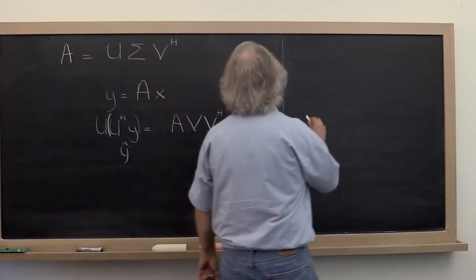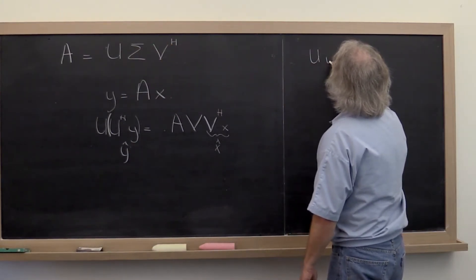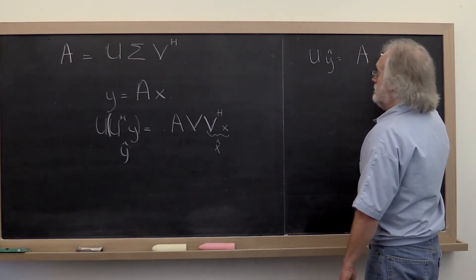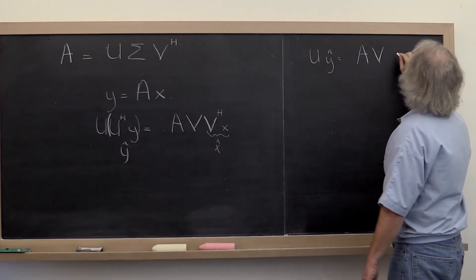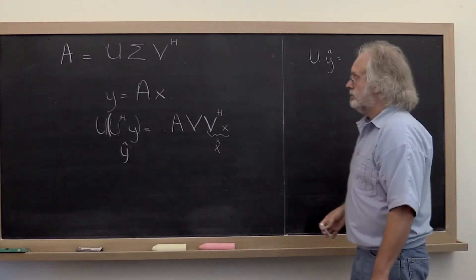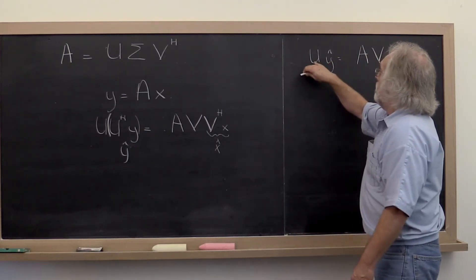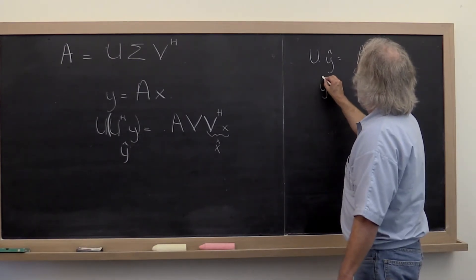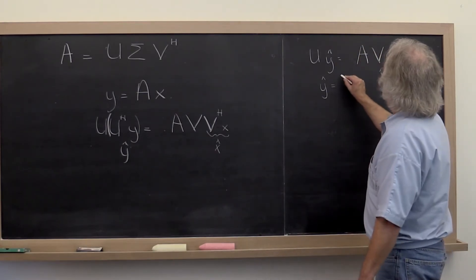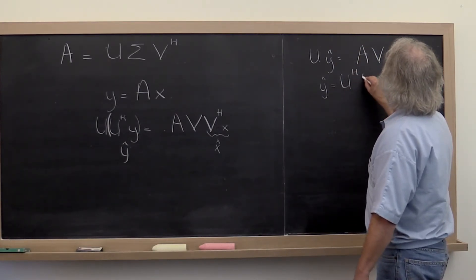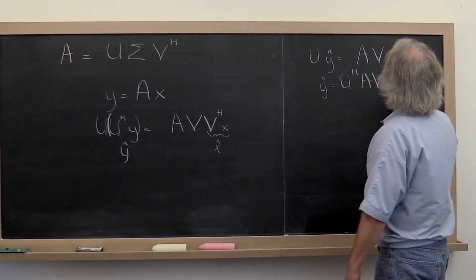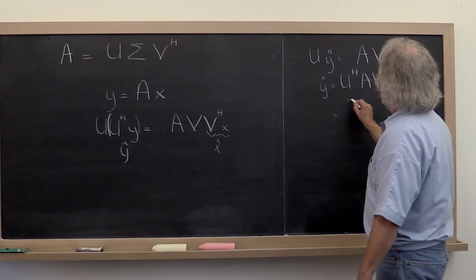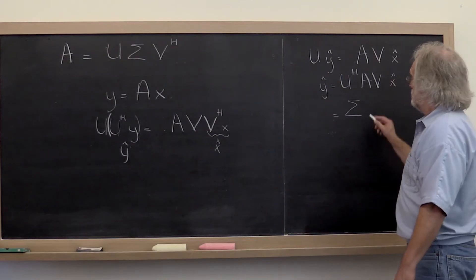So now we have that u times y hat is equal to a times v times x hat. We can then multiply both sides by u Hermitian transpose. And what we get is that y hat is just equal to u Hermitian A v x hat. But we recognize this as just the diagonal matrix sigma times x hat.